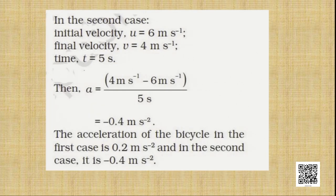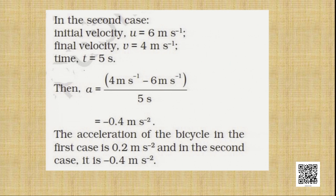For case 2: initial velocity was 6 meter per second and it reduced to a final velocity of 4 meter per second. Applying the formula final velocity minus initial velocity divided by t gives us acceleration. Substituting the values, we get −0.4 meter per second square. The negative sign indicates retardation. So the acceleration in case 1 is 0.2 m/s² and in case 2 it is −0.4 m/s².